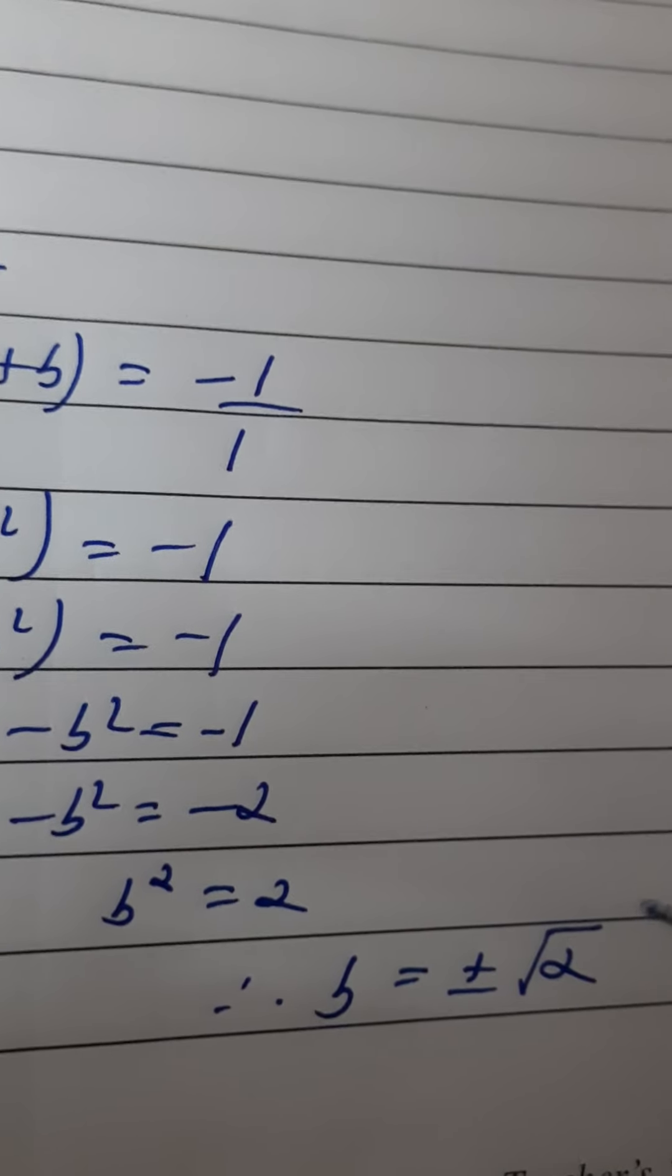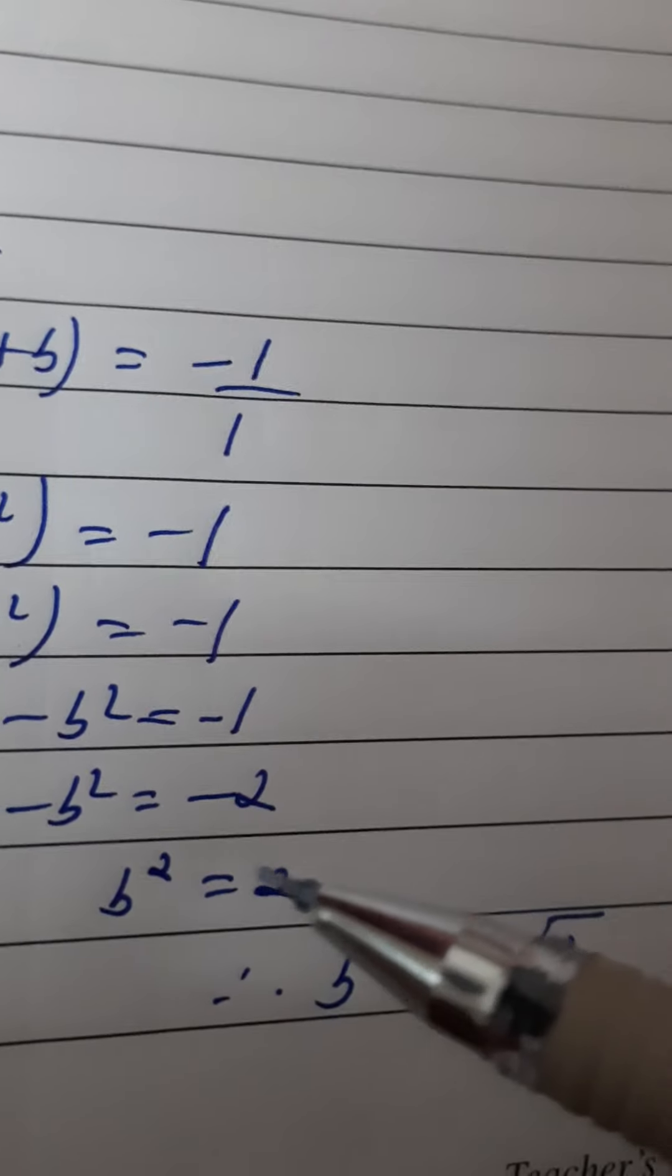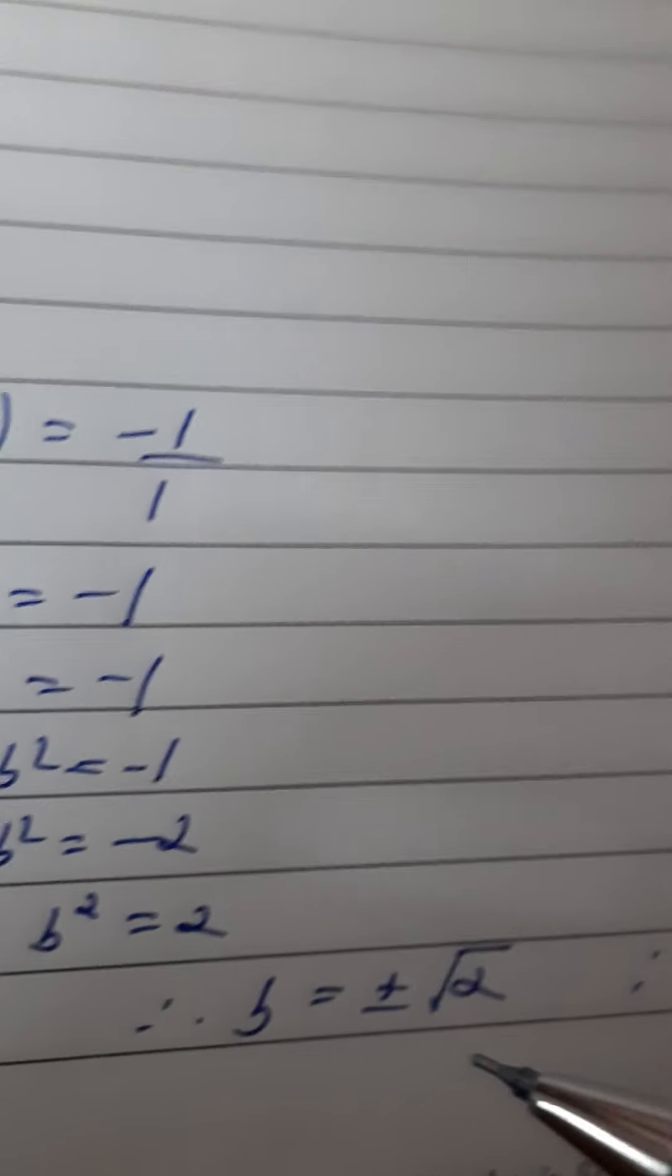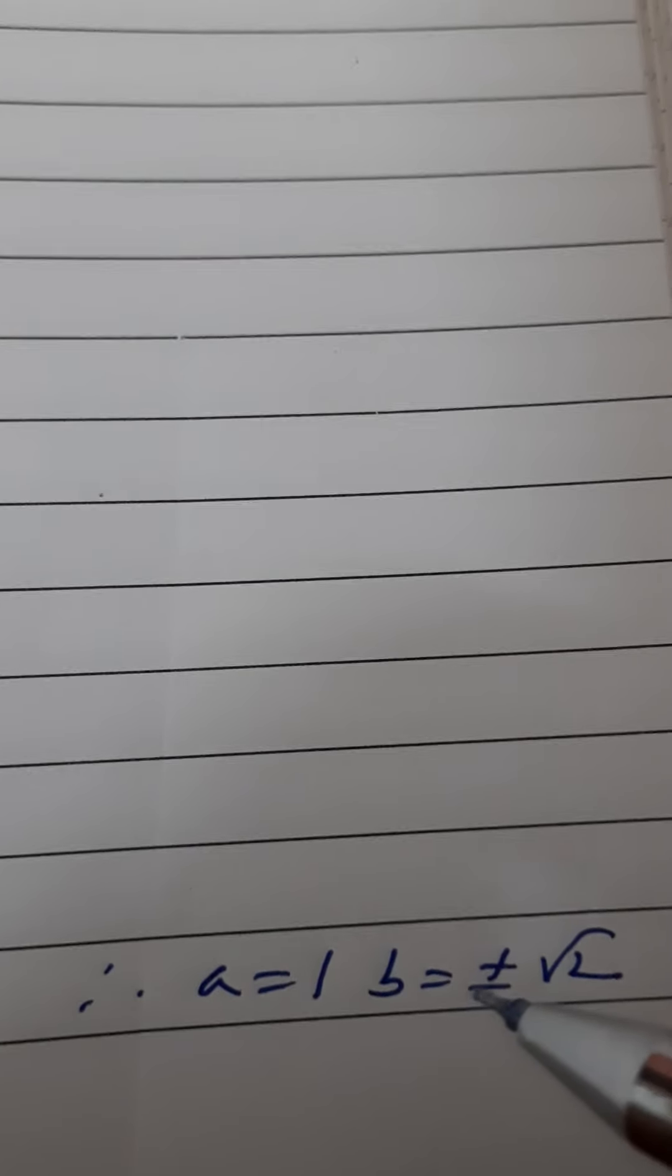So please remember in class 10 that whenever you take square roots, to take the plus minus case. So final answer we will write: a = 1 and b = plus minus root 2. Okay, hope it's clear, this question number 3.